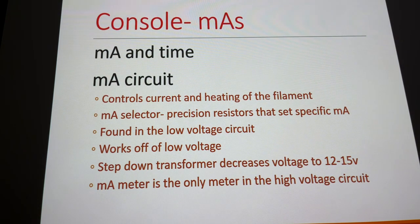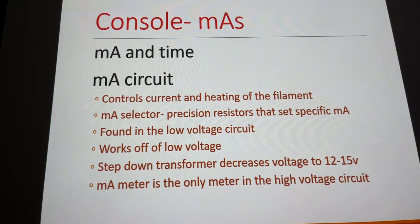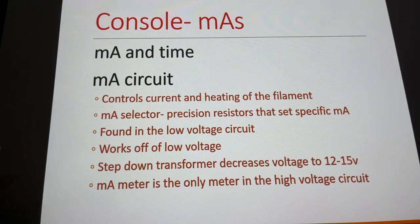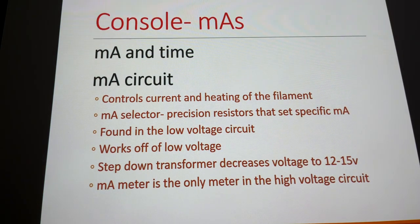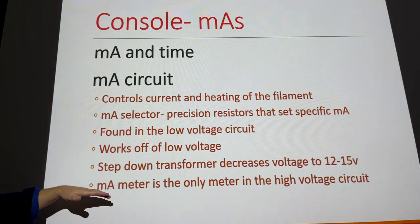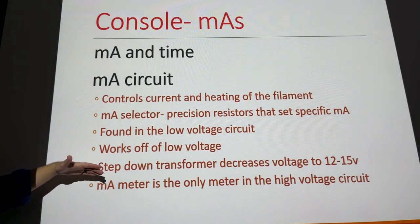The MA circuit works off low voltage — around 25 volts, very low compared to even the auto transformer at 440 volts. We don't want electrons jumping from cathode to anode until we're ready, so it works off very low voltage. There's also a step-down transformer to bring it to the 12–15 volts we want, never exceeding 25 volts.